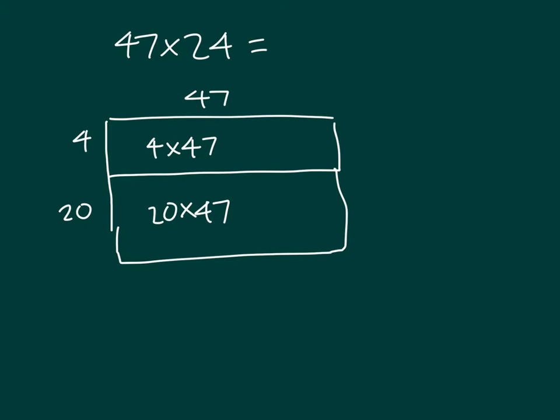Showing that standard algorithm, we'd have 47 times 24, where first we would figure out that product, 4 times 47. 4 times 7 which is 28, 8, regroup a 2, and 4 times 4 which is 16. Adding together that 2, you get 18. So that's 188.